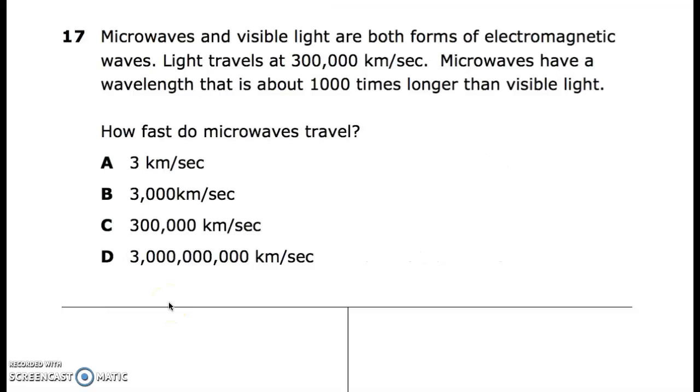17. Microwaves and visible light are both forms of electromagnetic waves. Light travels at 300,000 kilometers per second. Microwaves have a wavelength that is about 1,000 times stronger than visible light. How fast do microwaves travel? There's your answers.